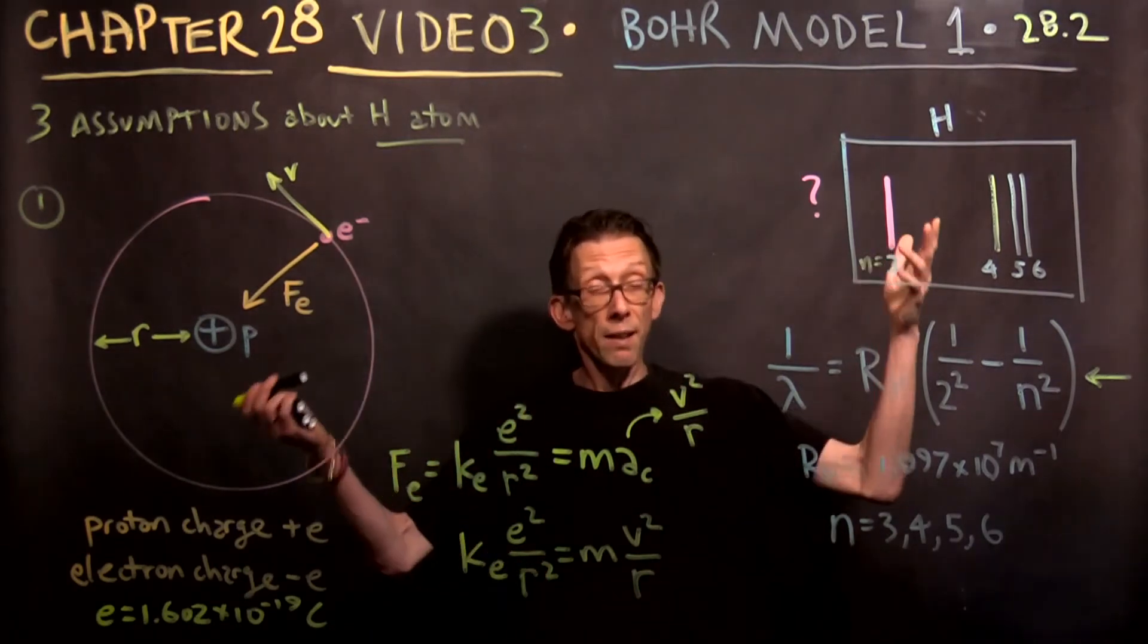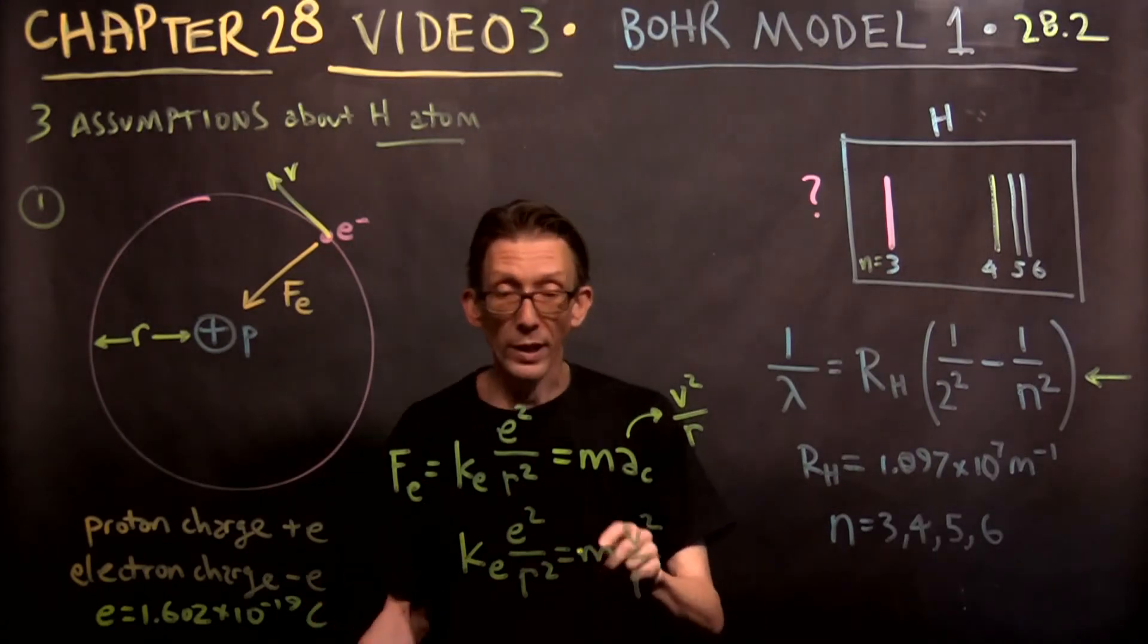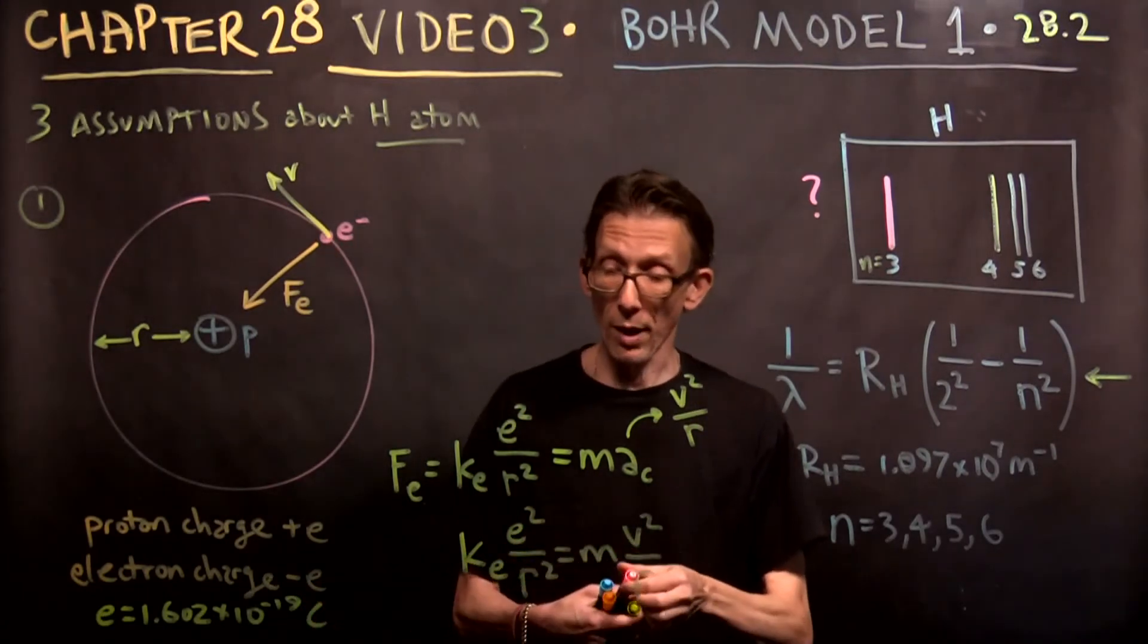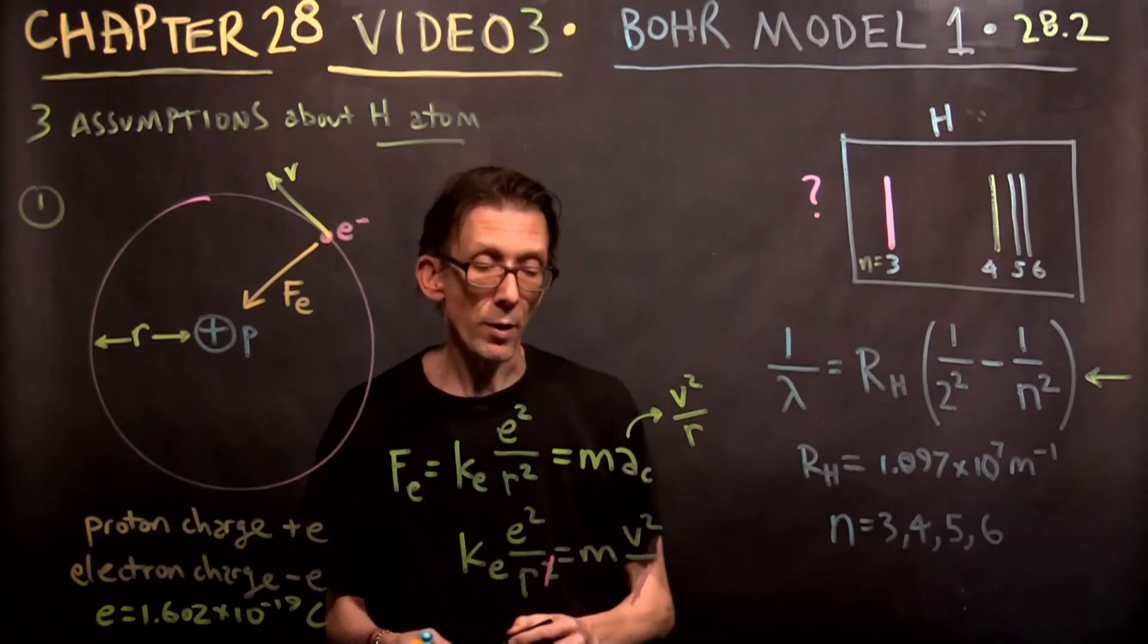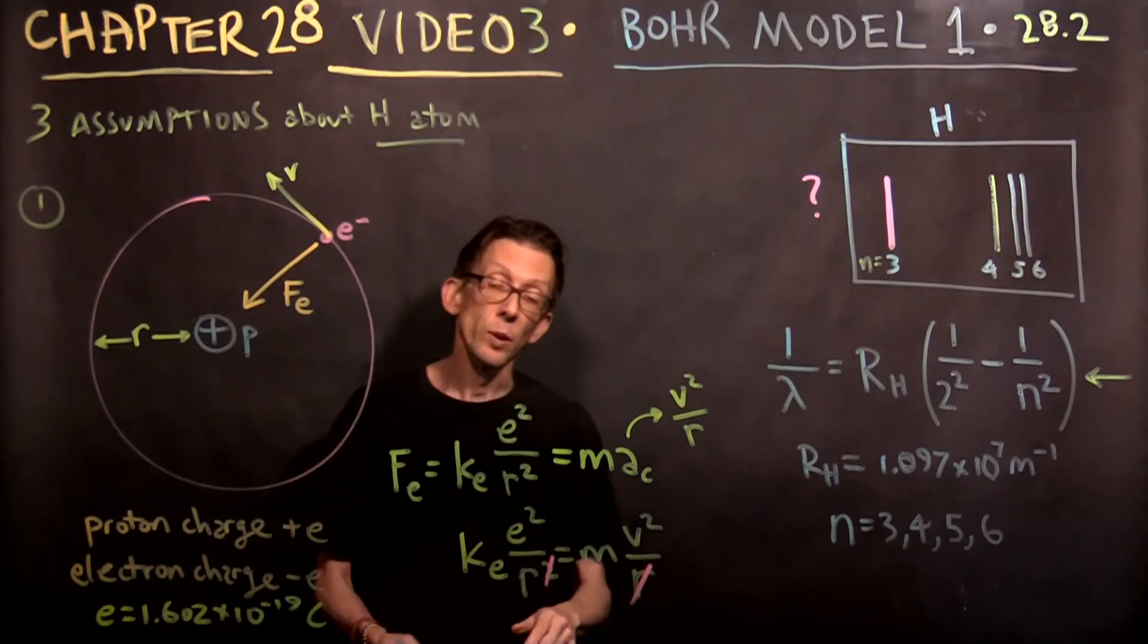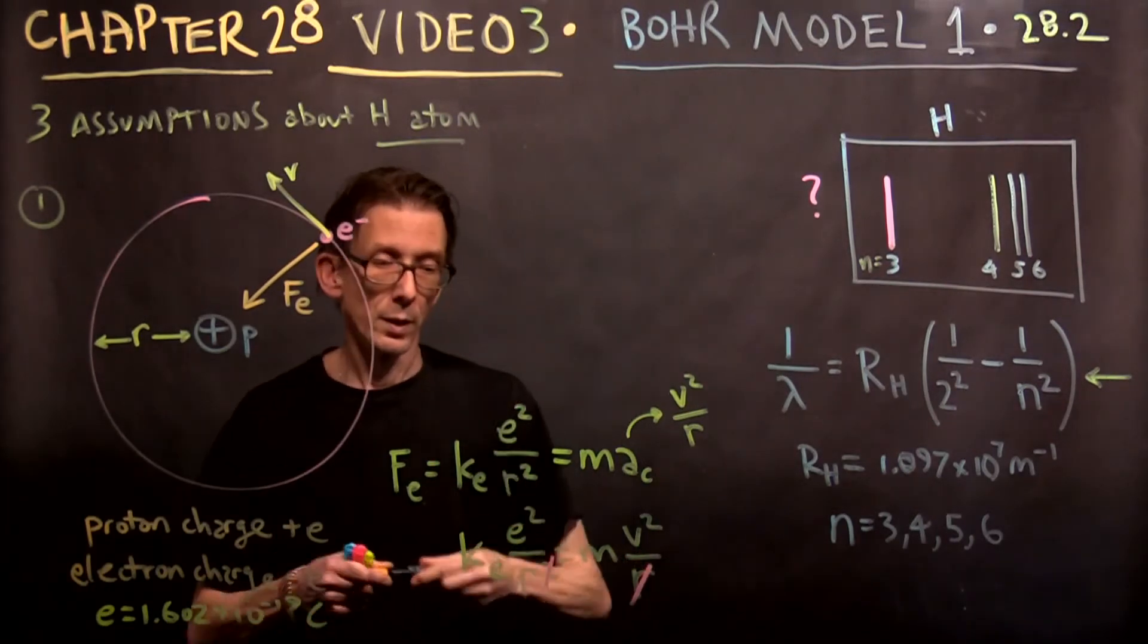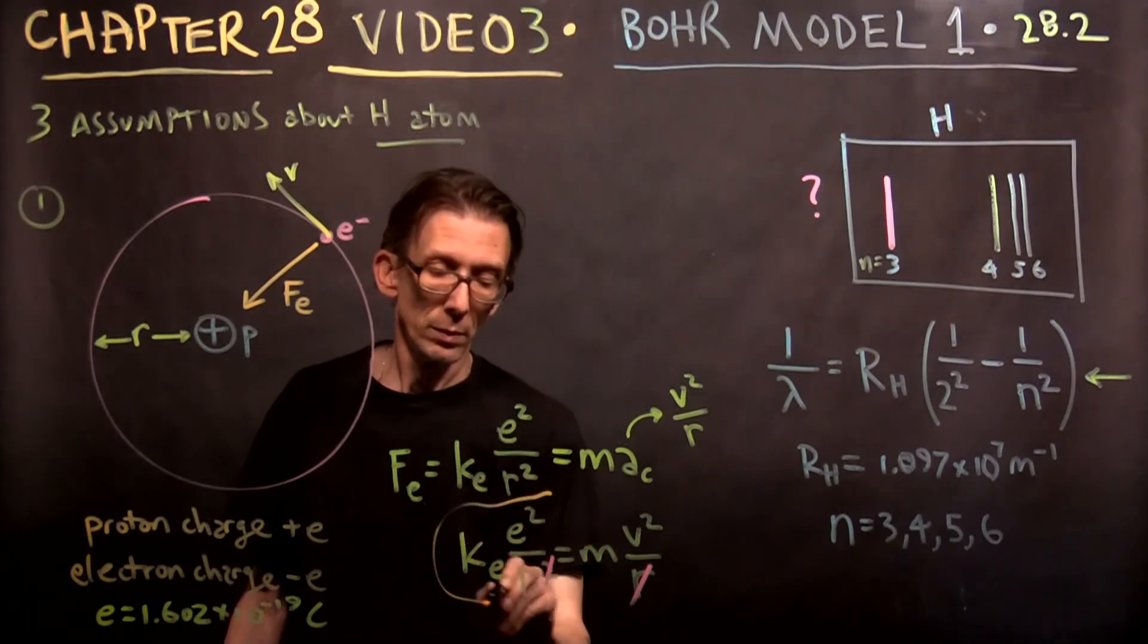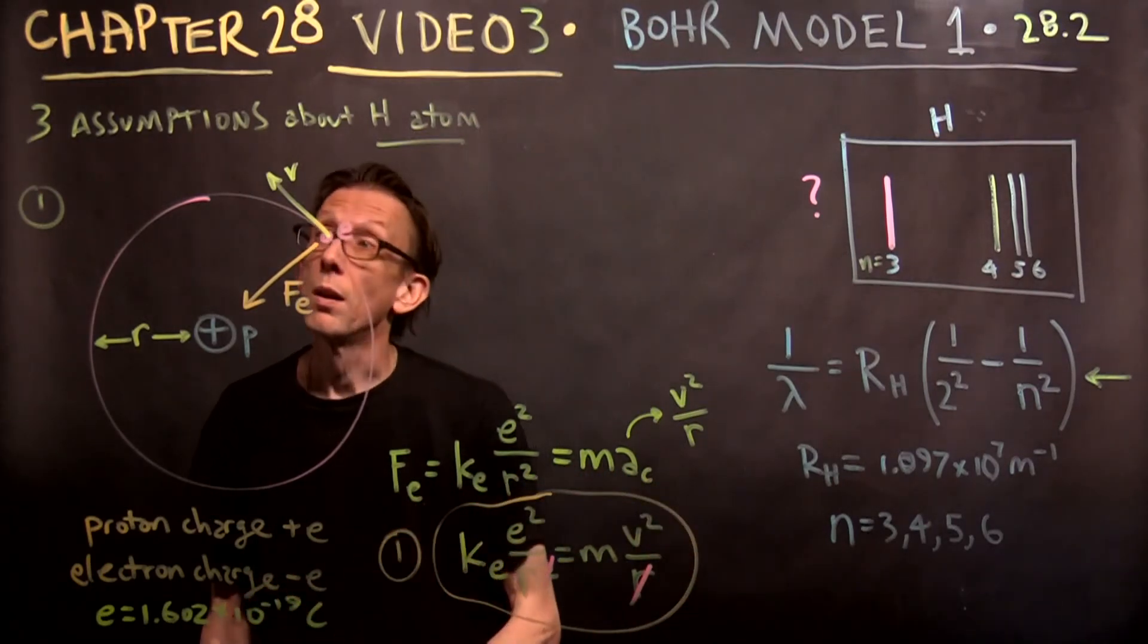Right? Because a sub c is v squared over r. And of course, we can cancel one of those r's. We have one over r squared on the left hand side. So we can cancel that. But this